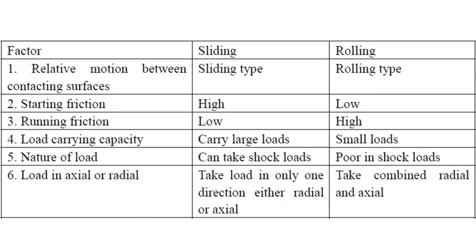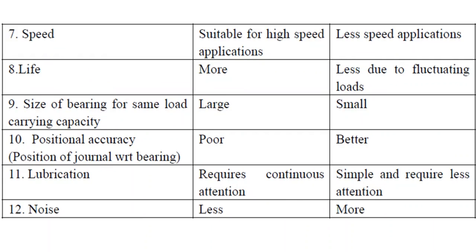Sliding contact bearings can take load only in one direction, either radial or axial, but rolling contact bearings can take both combined radial and axial load. Regarding speed, sliding contact bearings are suitable for high speed applications, while rolling contact bearings are suitable for lower speed applications.